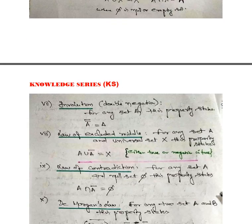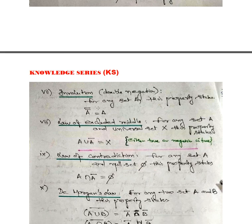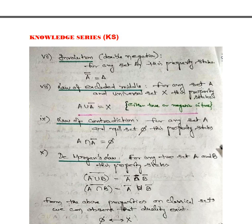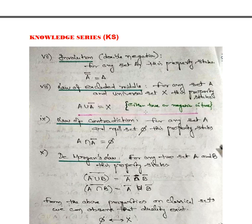Involution means double negation: a double complement of any set A is the same as A. The Law of Excluded Middle states that A union A-bar equals X — the universal set — meaning all elements are taken, whether true or false, covering the entire universe.